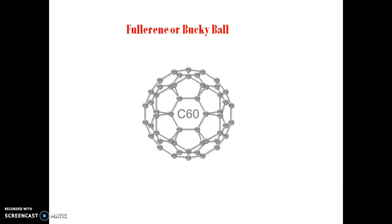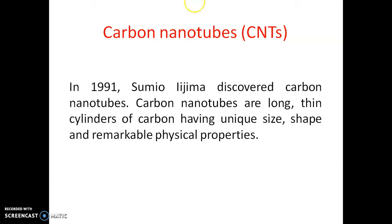Another allotrope of carbon at the nanoscale is graphene, and then we have the carbon nanotube. The carbon nanotube was discovered in 1991 by Sumio Iijima. A carbon nanotube is a very thin, long cylinder made up of carbon, where the carbon atoms are interconnected into hexagons. Before studying CNTs further, we must understand what graphene is.